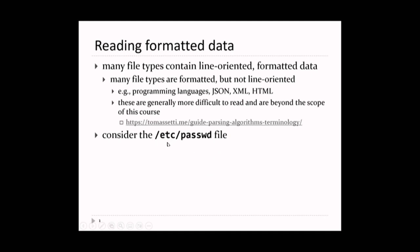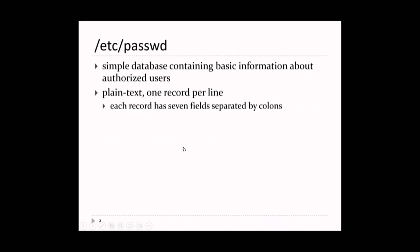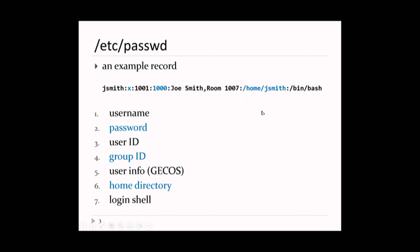We want to look at line-oriented formatted data. There's a password file on every Linux or Unix system - it's at /etc/password. In the old days, it really did contain user passwords in plain text, which is kind of nuts. It's no longer the case that passwords appear in this file. Instead, it's basic information about users of the system, one record per line.